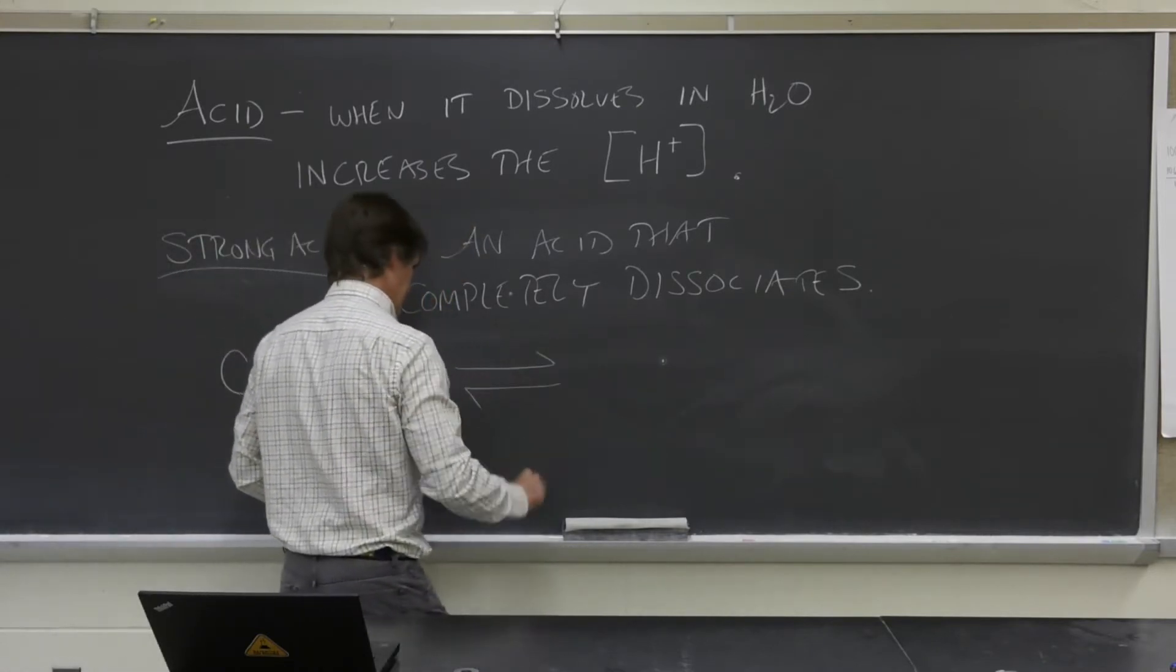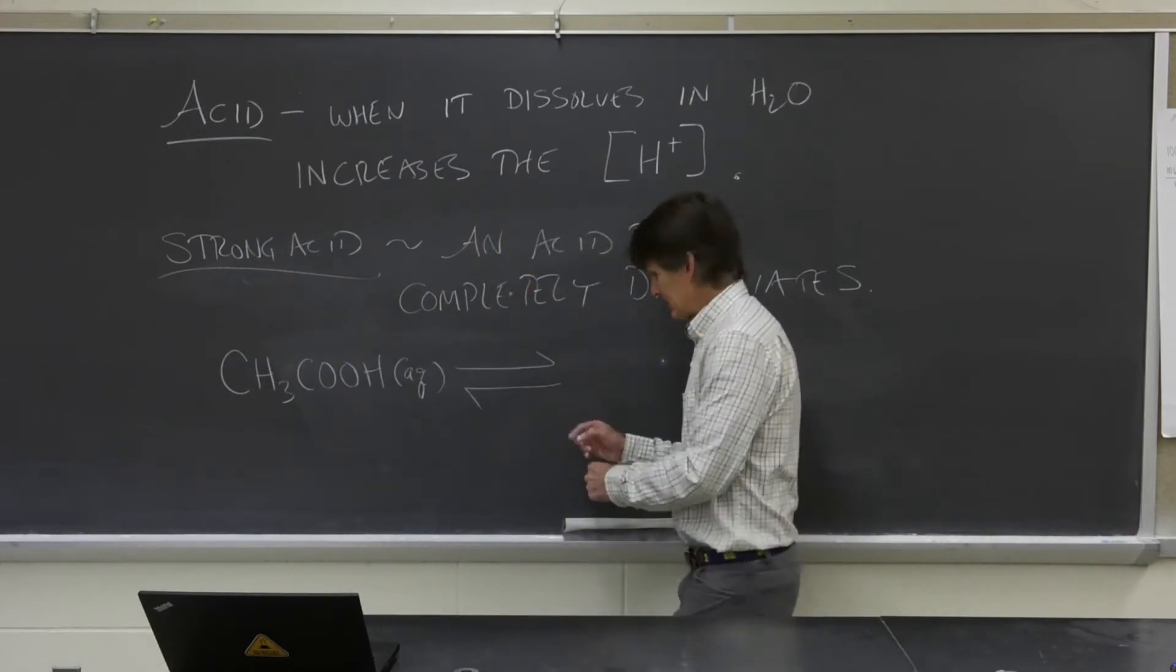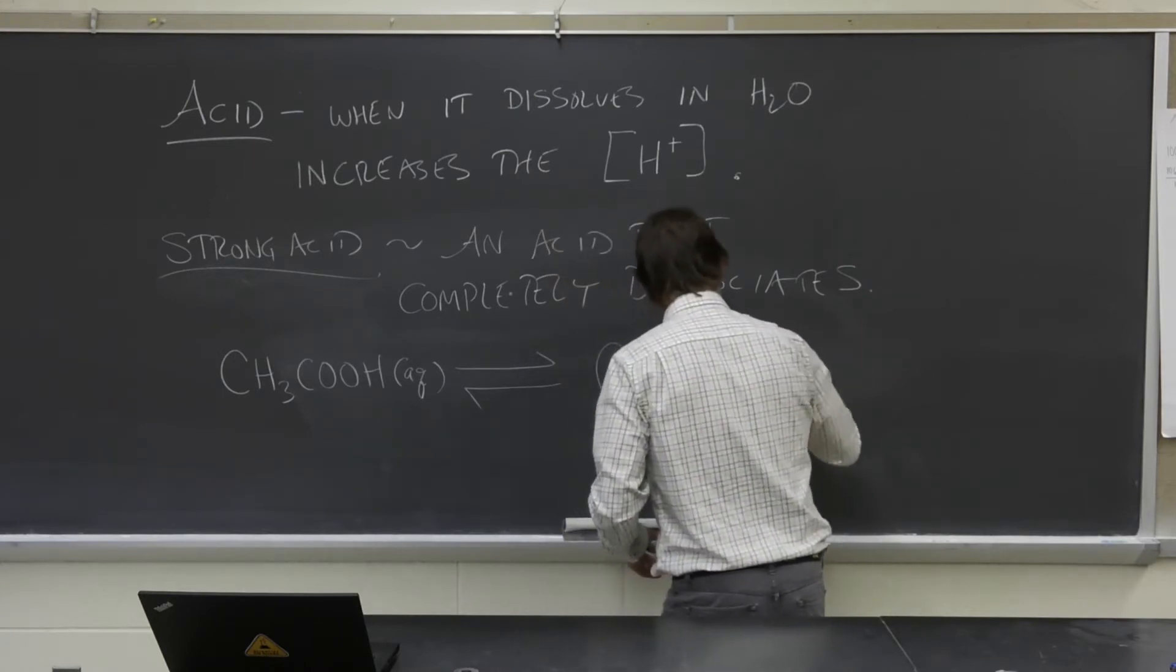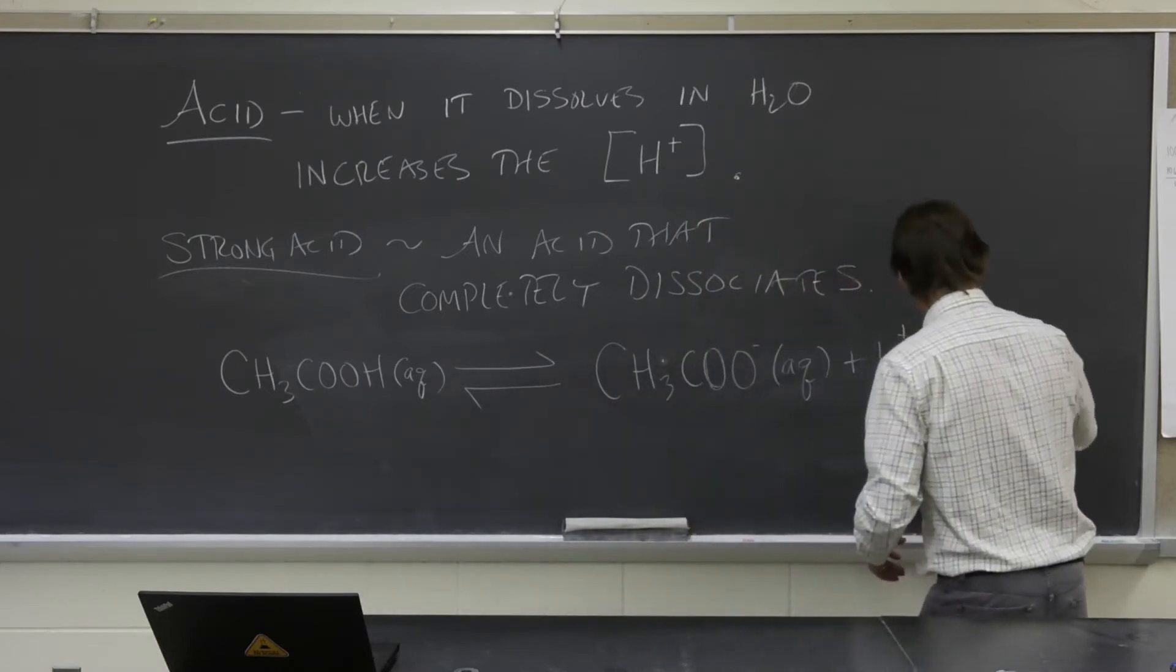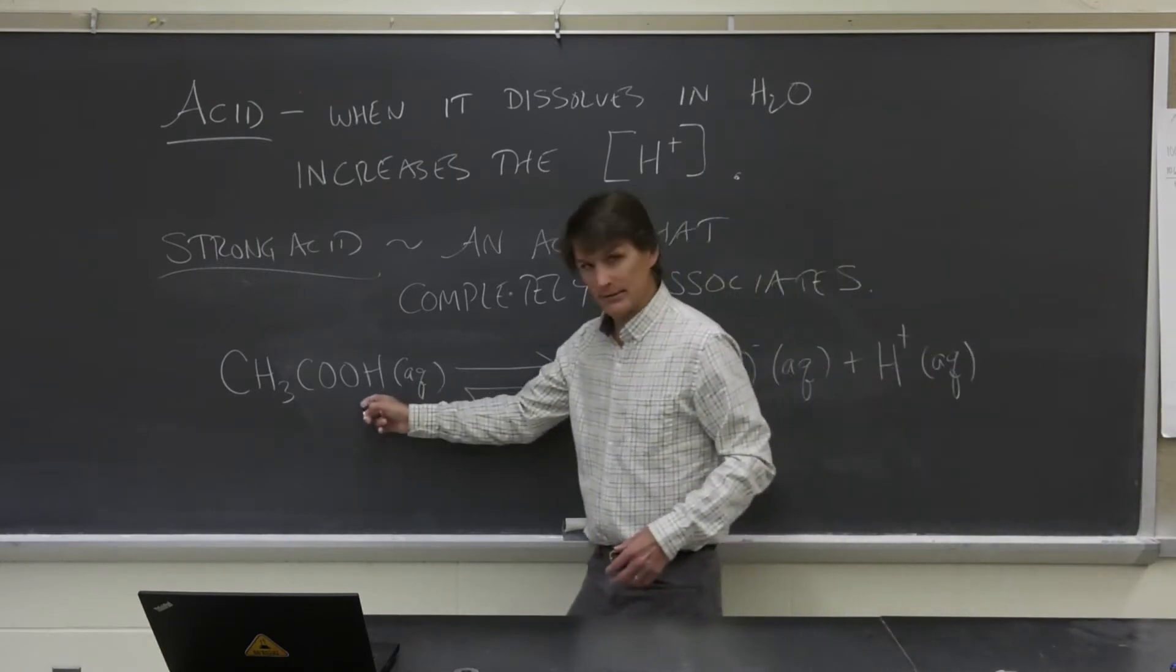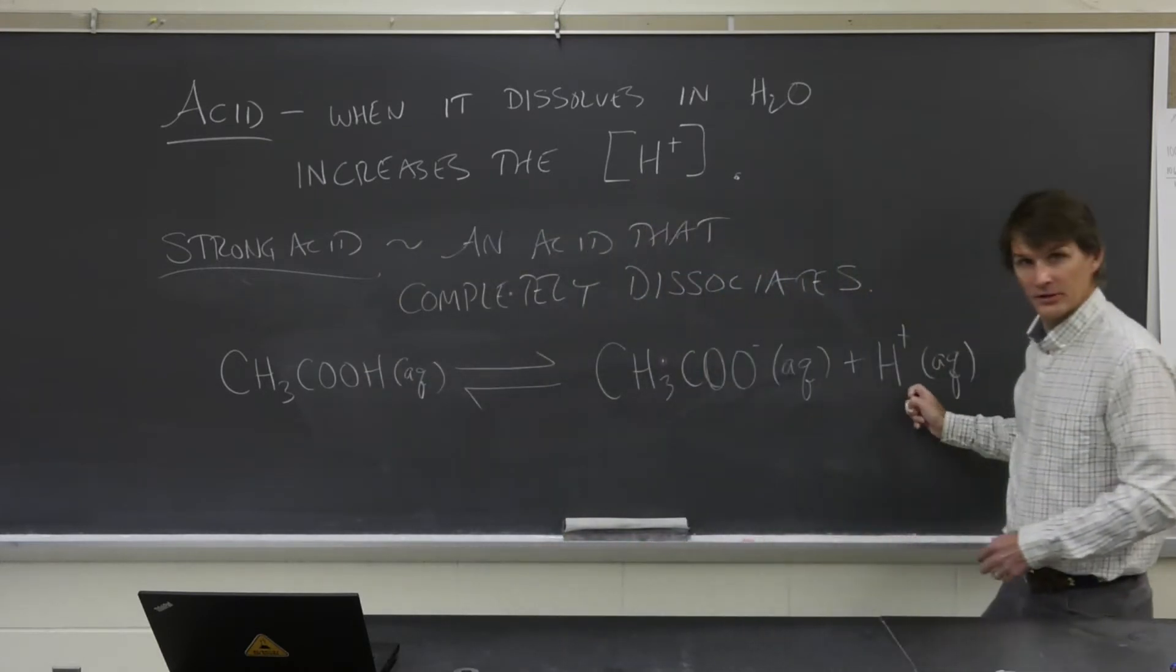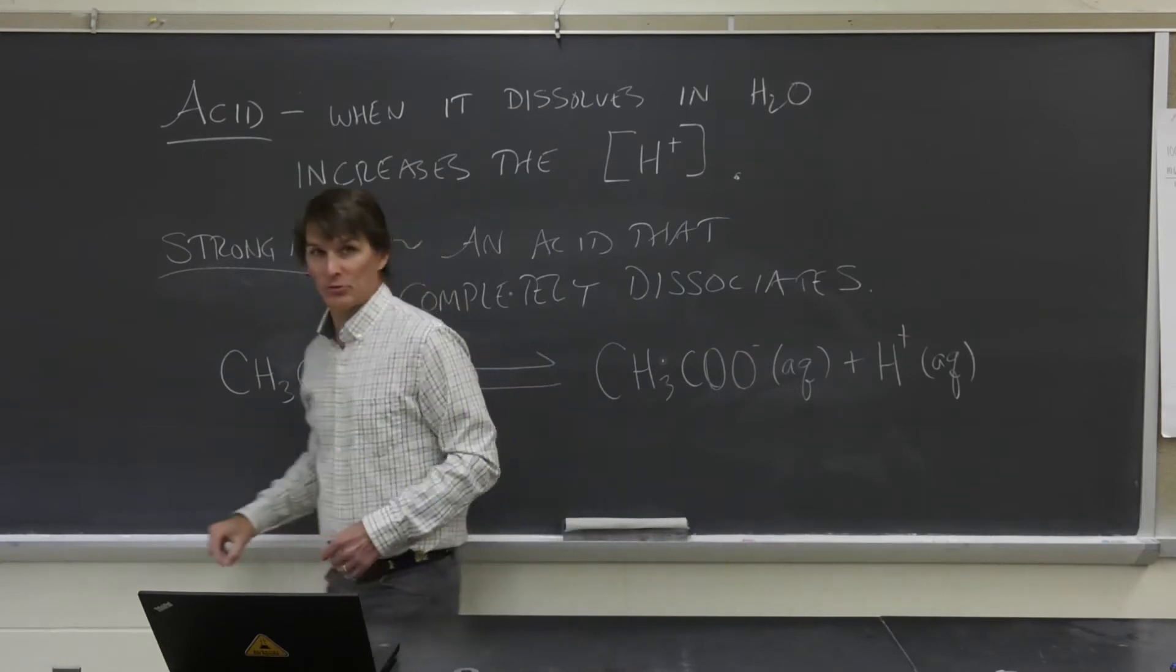Not all of it dissolves. So I'm going to write a double arrow here to represent what's going on. What we're going to get are acetate ions and protons. There's the proton. That's what makes acetic acid an acid. When you dissolve it in water, it increases the concentration of protons. There's the acid proton.